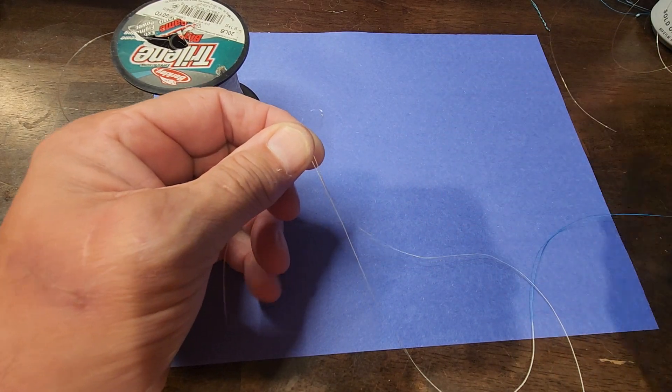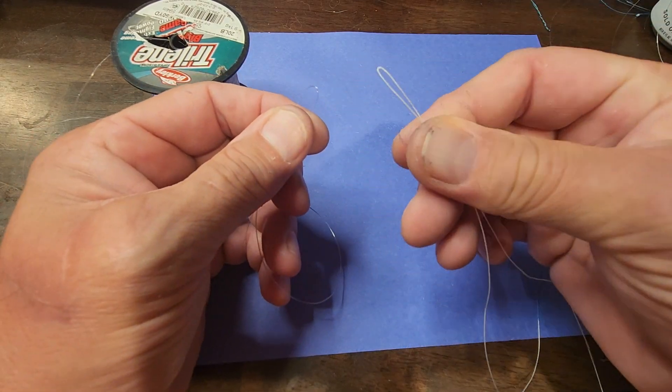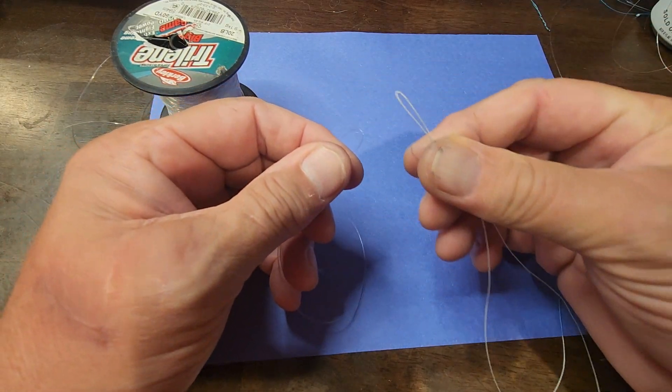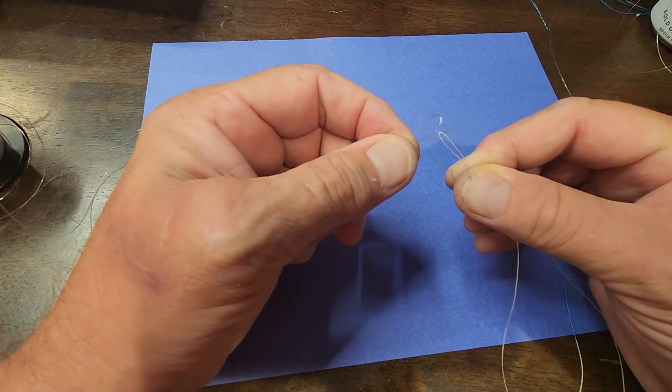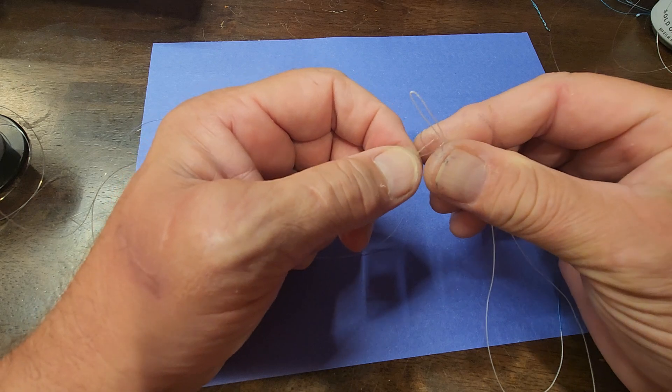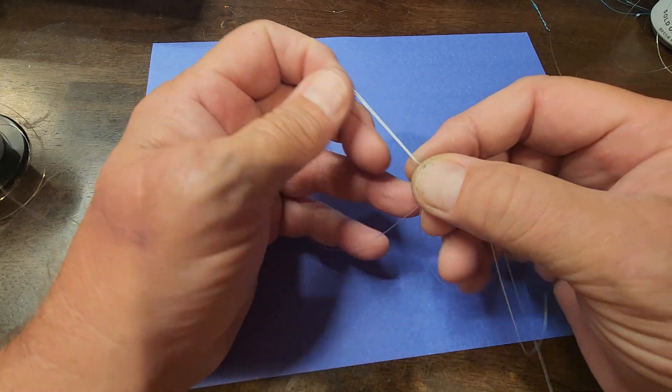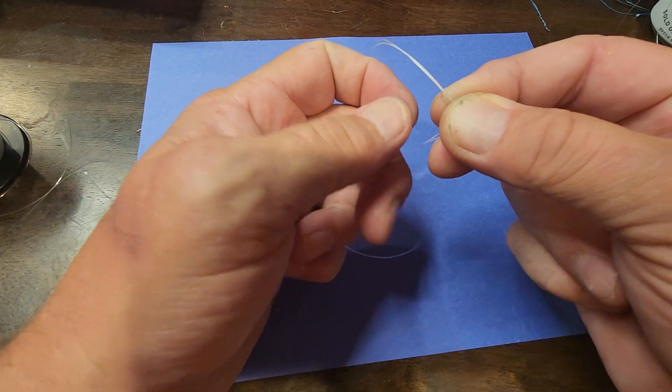I've got the 30 pound braid here and I've taken it and folded it in half and I've got myself about a six or eight inch tail. Then I've taken a loop in my mono. I'm gonna feed that through. I'm gonna give myself about six inches of line there to play with.